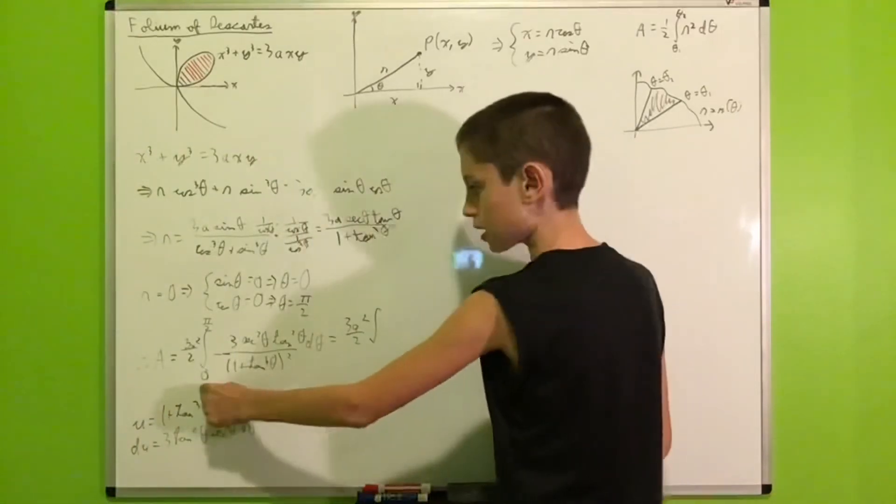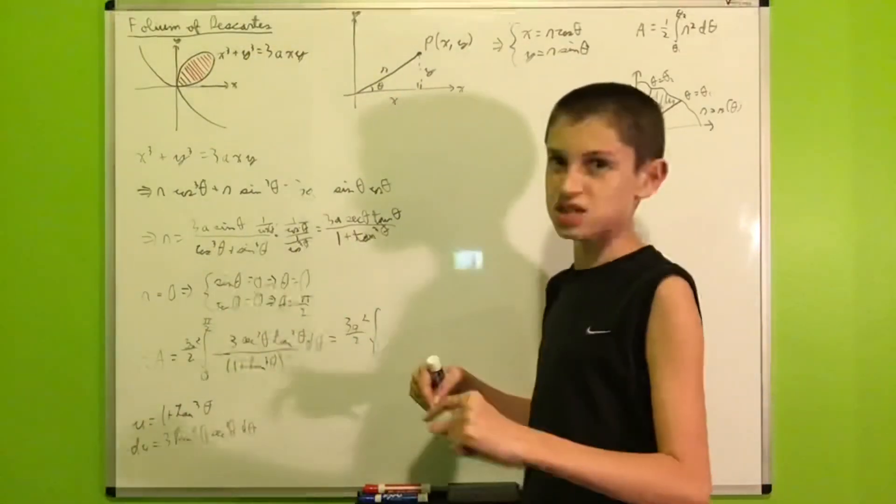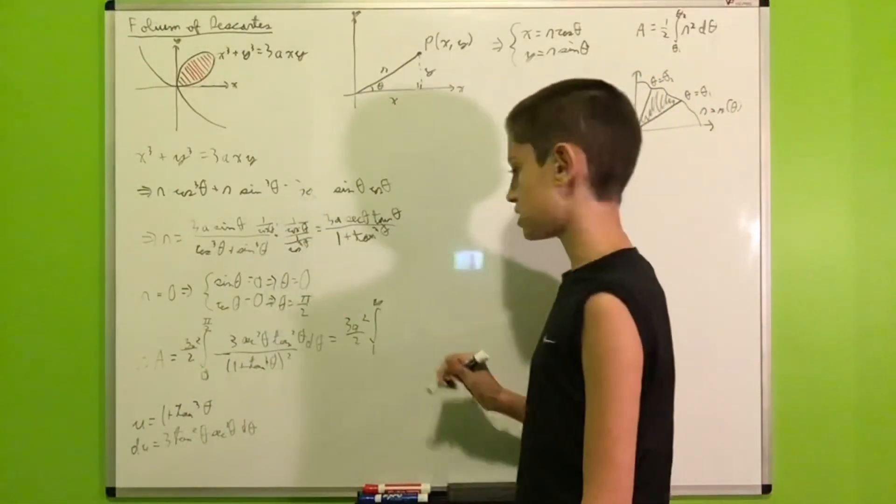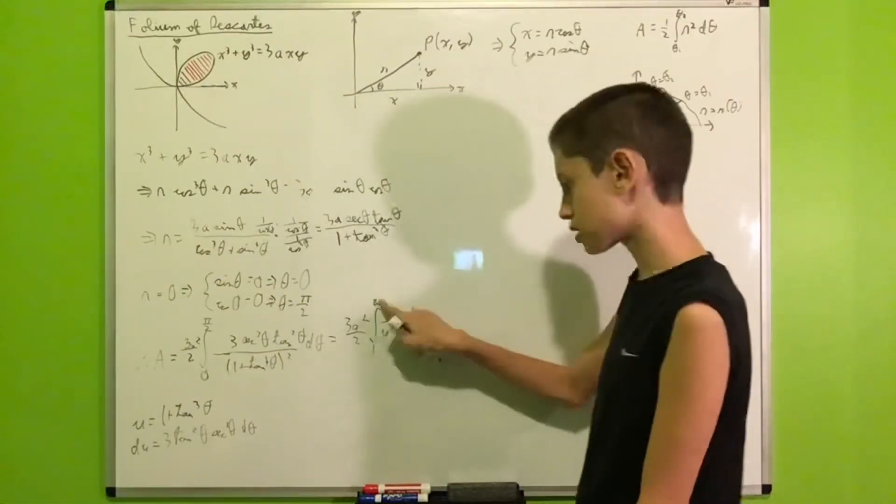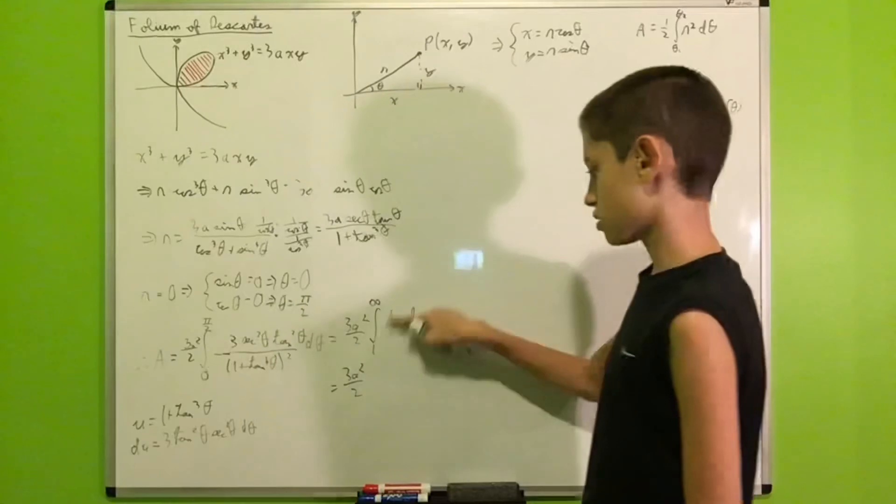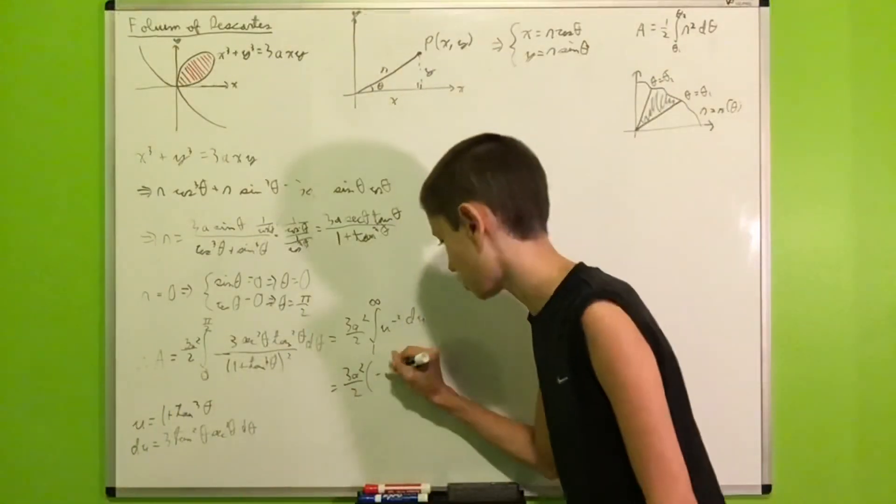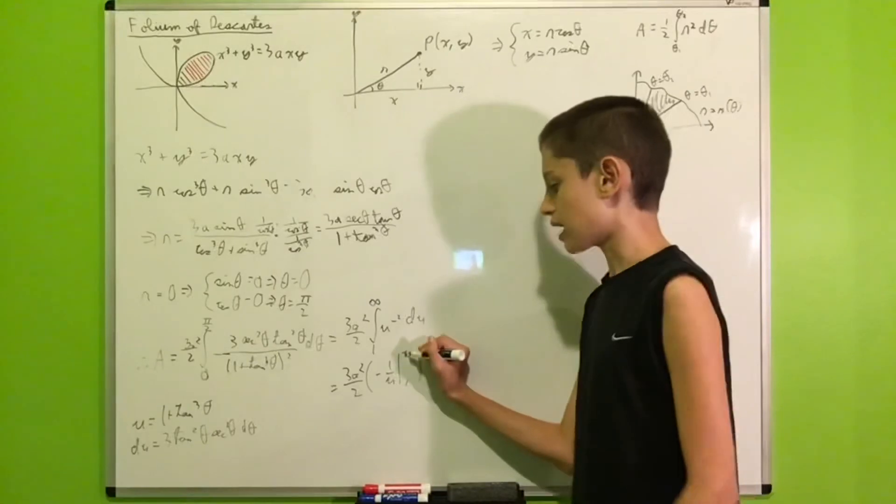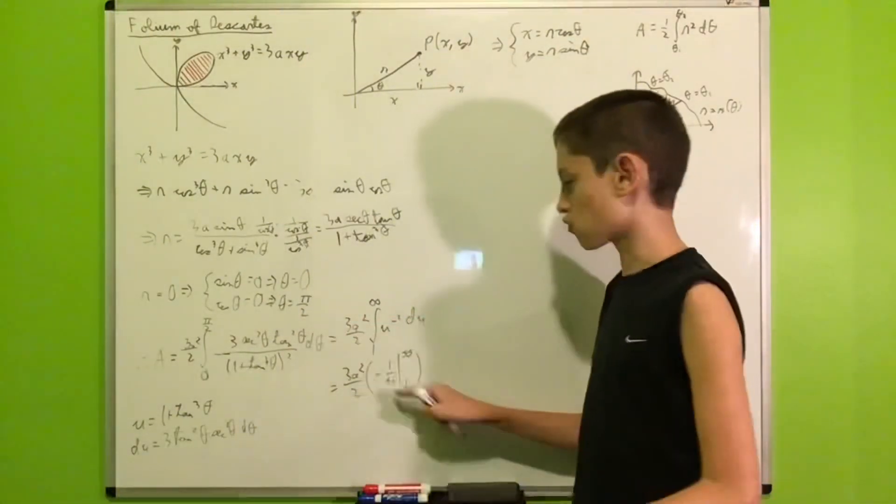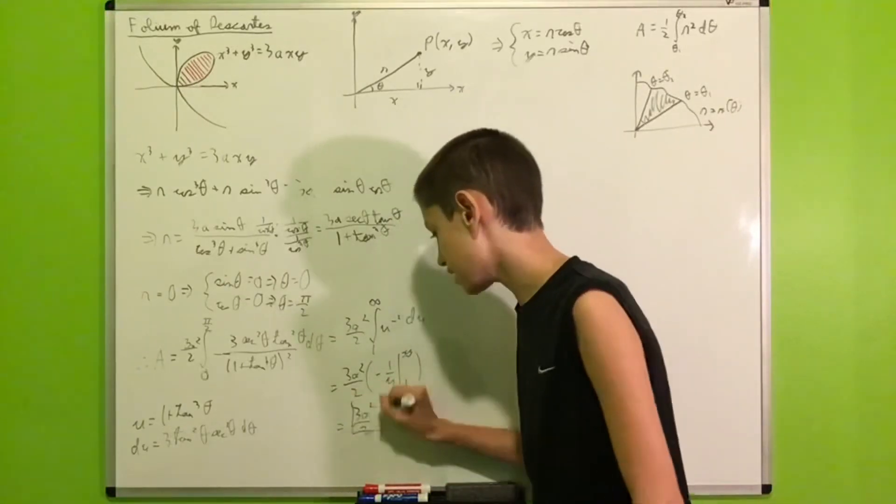So, we'll be left with 3a squared over 2 times the integral of... So, if we plug in 0 here, we get 1 plus 0, which is 1. And if we plug in pi over 2, as theta goes to pi over 2, tangent theta goes to infinity. Infinity cubed is infinity, 1 plus infinity is infinity. So, infinity here, and we get 1 over u squared du. And now, things are pretty easy to integrate. So, 3a squared over 2 times 1 over u squared is just u to the minus 2. Use the power rule, we get u to the minus 1 over minus 1, which is negative 1 over u. Evaluate it at 1 and infinity. As u goes to infinity, 1 over u goes to 0. So, we'll be left with 0 minus minus 1 over 1, which is just 1. So, overall, our answer is 3a squared over 2.